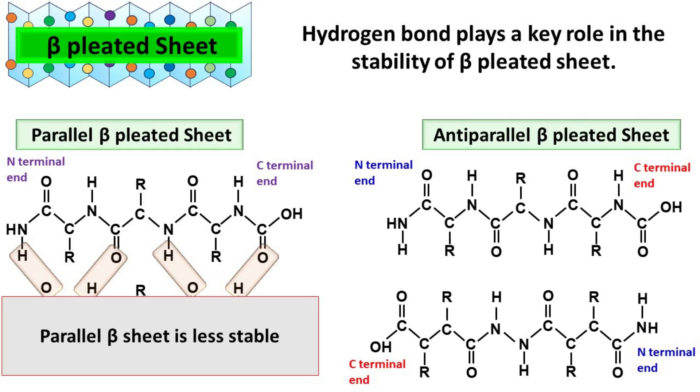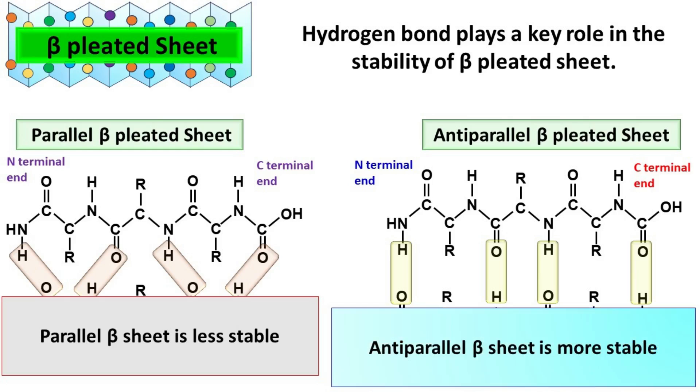In case of anti-parallel Beta-Sheet, the hydrogen bonds between NH and CO groups are aligned exactly opposite to one another. This arrangement makes the anti-parallel Beta-Sheet more strong and stable compared to parallel Beta-Sheet.